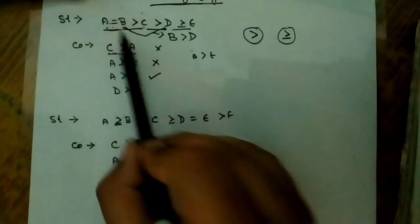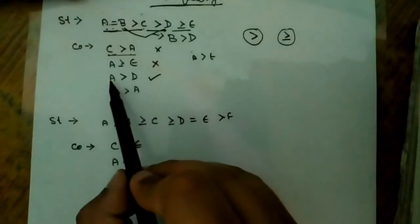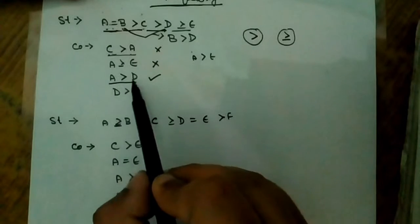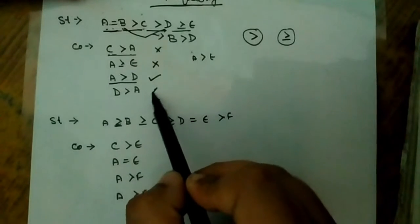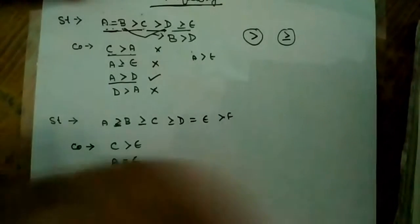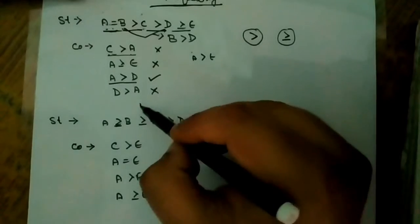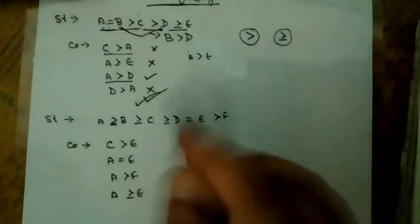Now, d > a. Since a is greater than d, d > a is obviously false. So this one is completed.